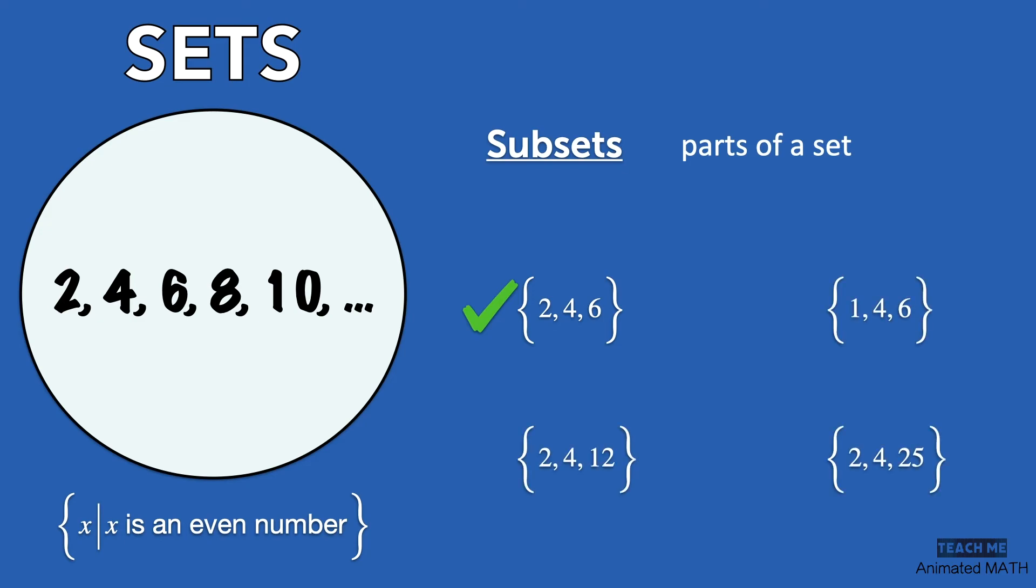Let's check these other sets. The set of 1, 4, and 6 is not a subset because 1 is not even. 2, 4, and 12 are all even, so this is a subset.